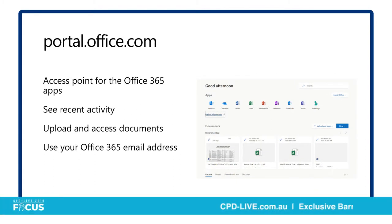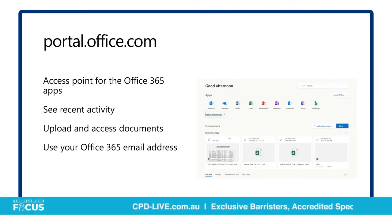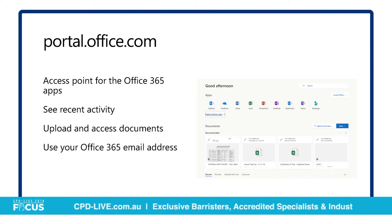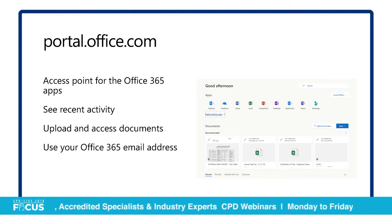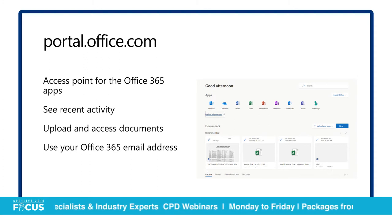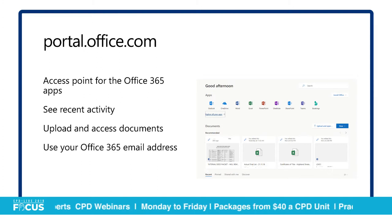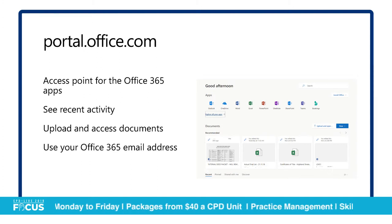If for whatever reason you lose your laptop or you can't get access to your office, you can actually just use a web browser and access your Outlook, access your emails and your Word documents — whatever you've been working on — from a web browser. So a little bit of built-in disaster recovery straight out of the box.